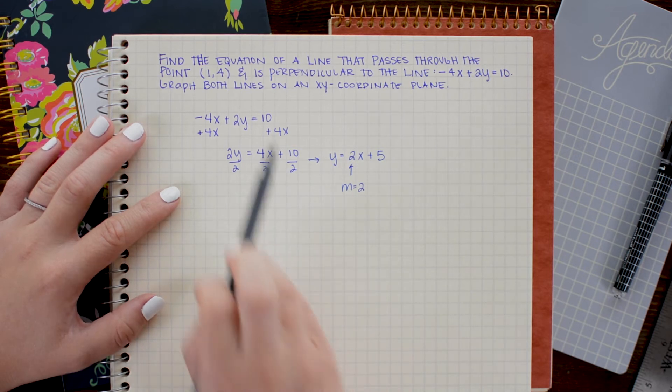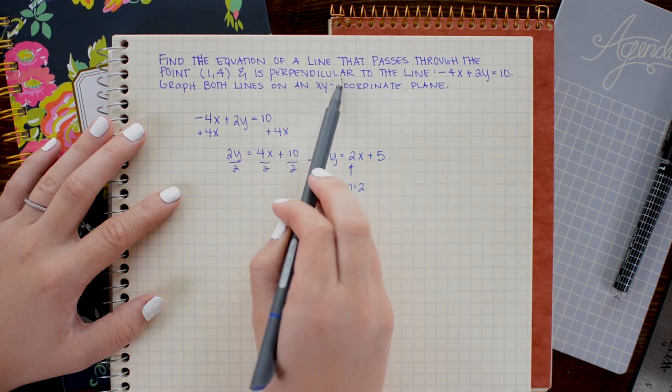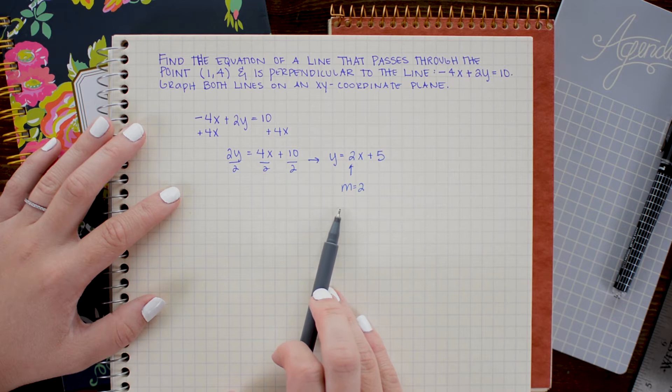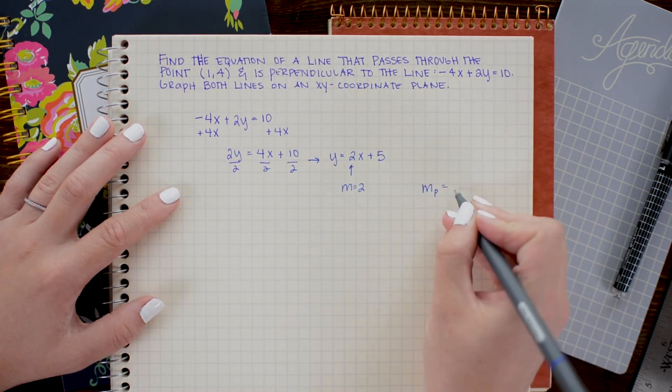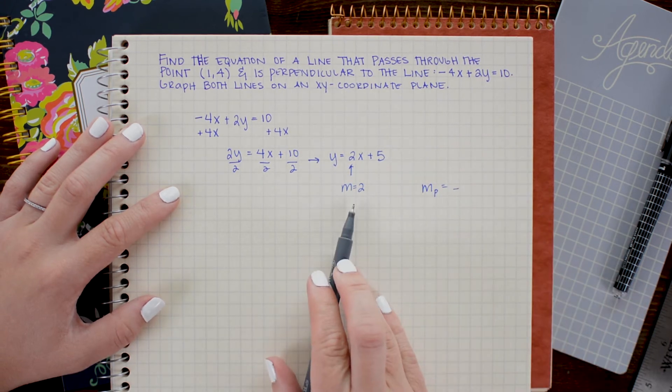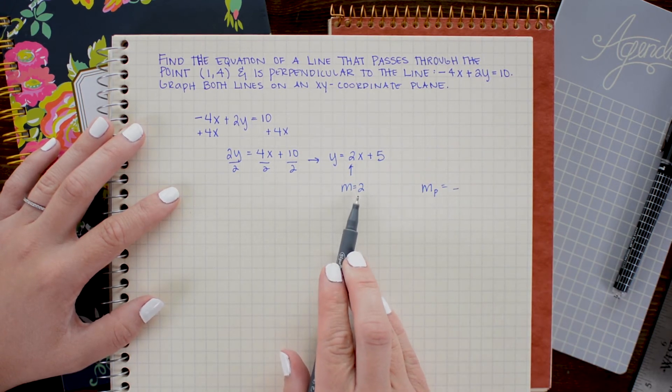And because I want to create a perpendicular line, I'm going to take the negative reciprocal of this. So recall that the negative reciprocal simply means that I change the sign. So since this is positive, my new slope will be negative. And I'm going to flip the fraction upside down.